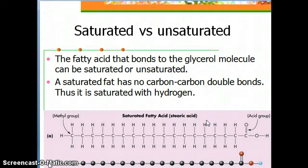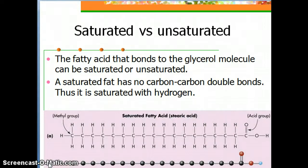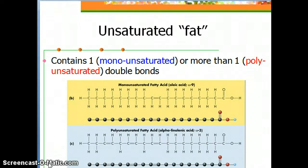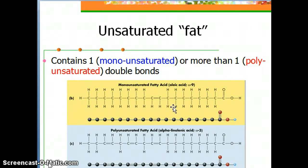You can't add any more hydrogens to a saturated fatty acid. An unsaturated fatty acid, on the other hand, has at least one or more double bonds. A monounsaturated fat has one double bond. A polyunsaturated fat has more than one double bond. These carbons that are double-bonded only have one hydrogen, so you can add another hydrogen — that's why they are called unsaturated fats.